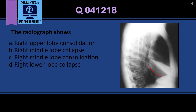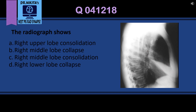Looking at our question: we see the cardiac shadow and a triangular opacity overlying the heart, so this is right middle lobe collapse — the correct answer is option B. In consolidation the fissure would remain horizontal, but here the fissure is pulled down by the collapse. Lower lobe pathology would be posterior to the oblique fissure; upper lobe pathology would appear superiorly. Overlying the heart is the middle lobe, confirming this is right middle lobe collapse.